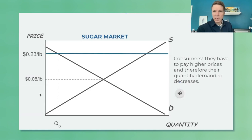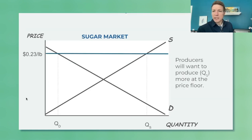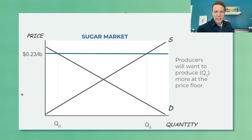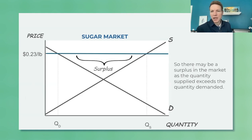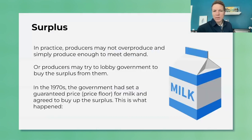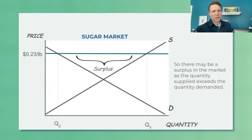There's a gap that develops between producers and consumers: producers want to supply more at the higher price, while consumers want to buy less. So instead of a shortage — like with a price ceiling — we're going to get a surplus in the market.